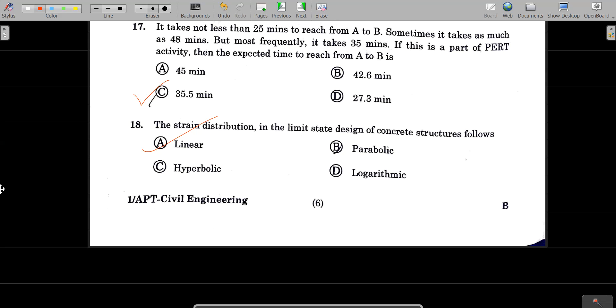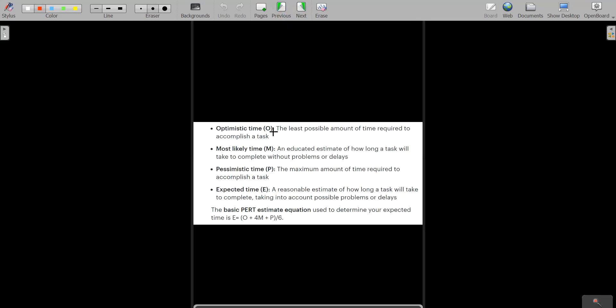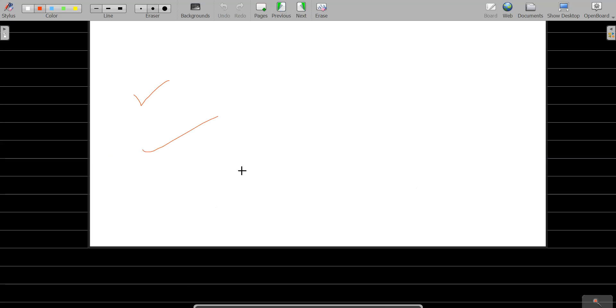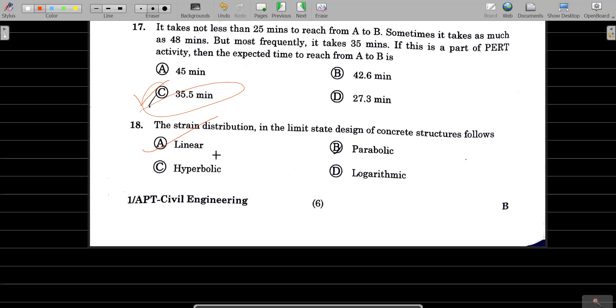Question number 17: The formula is basically comprised of optimistic time, most likely time, and pessimistic time. The expected time formula is: optimistic time plus four times most likely time plus pessimistic time, all divided by six. This is the beta distribution. Once you substitute the O-value, M-value, and P-value given, you will get 35.5 minutes.